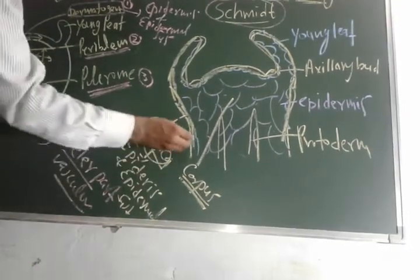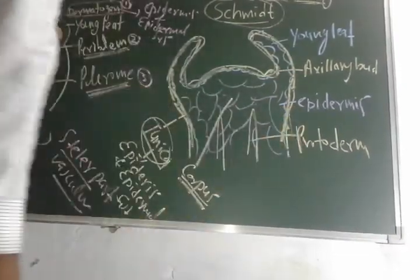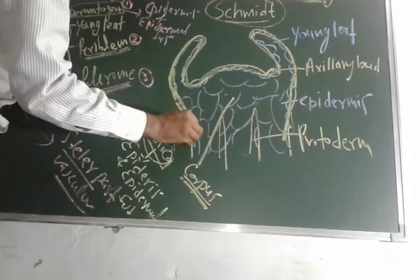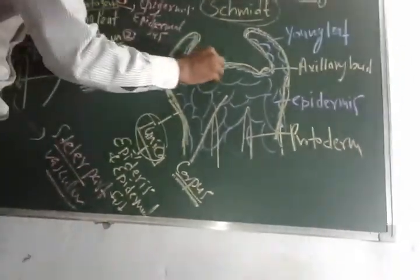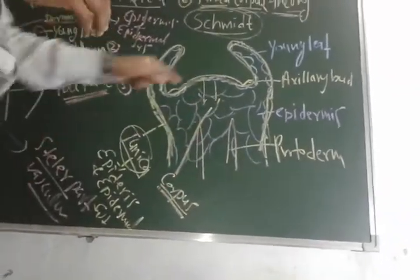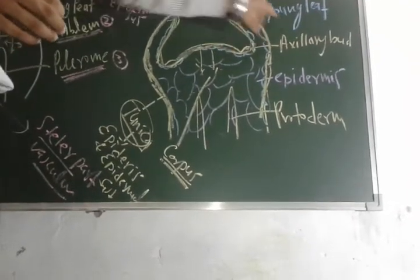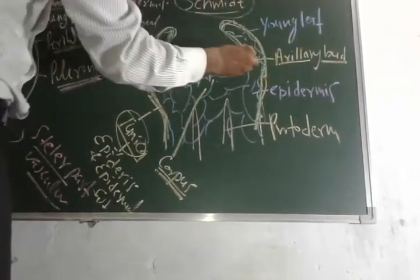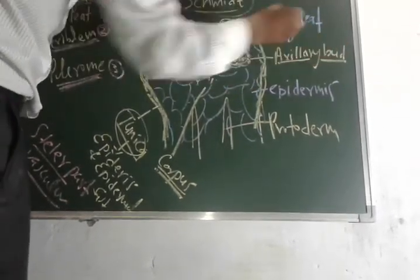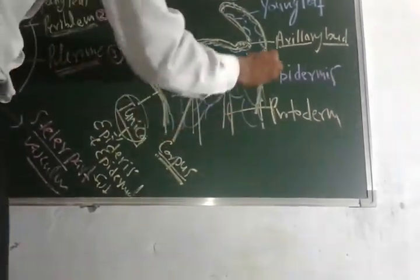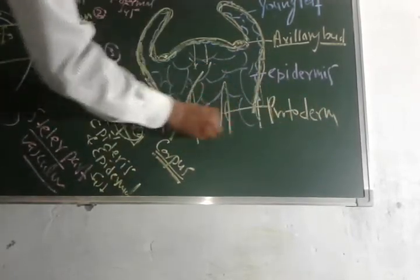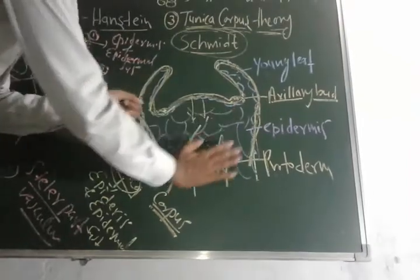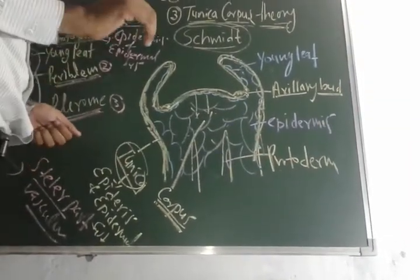In the tunica region, which is the peripheral part of the shoot apex, tunica regions divide into different types of regions. Some tunica regions form the epidermis, and beneath those, cells help in the formation of the corpus region. A particular zone is committed for the formation of young leaves. There is also an axillary bud region, protodermis region, and an outer epidermis region. Simply, tunica forms the epidermal system and corpus forms the whole remaining part of the body.